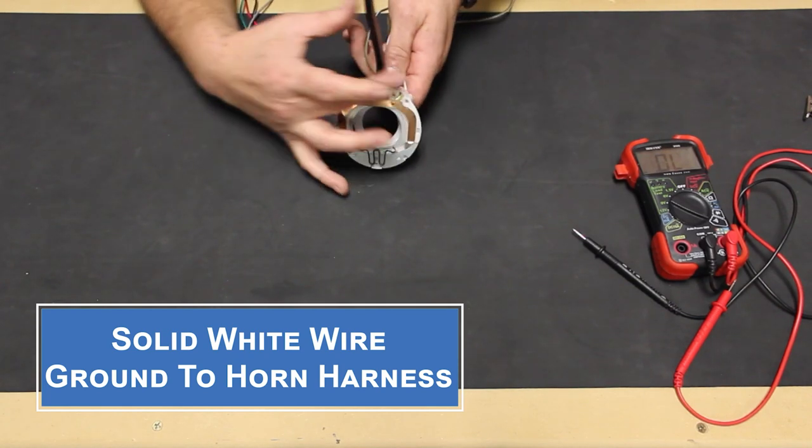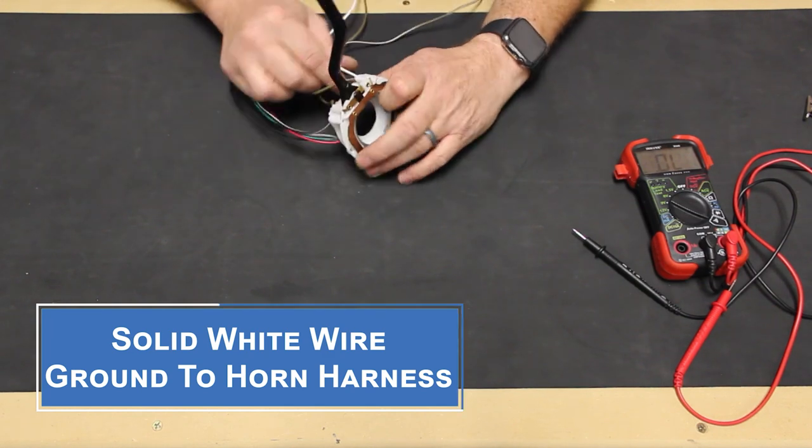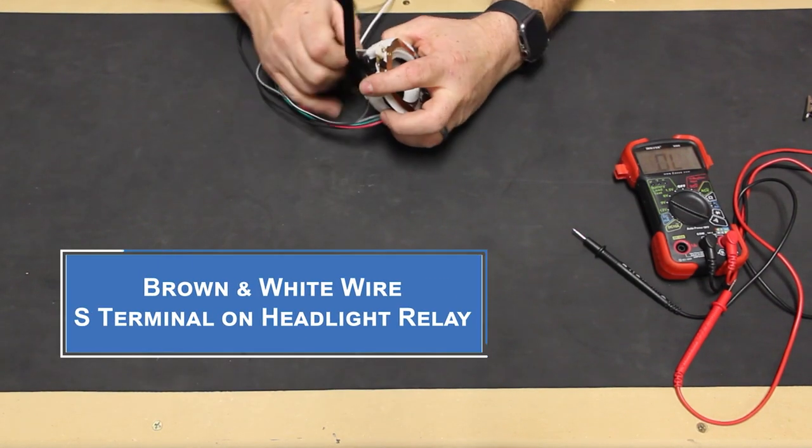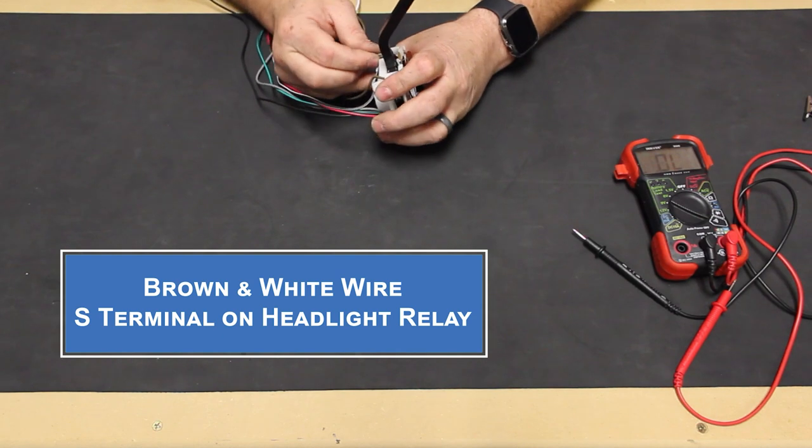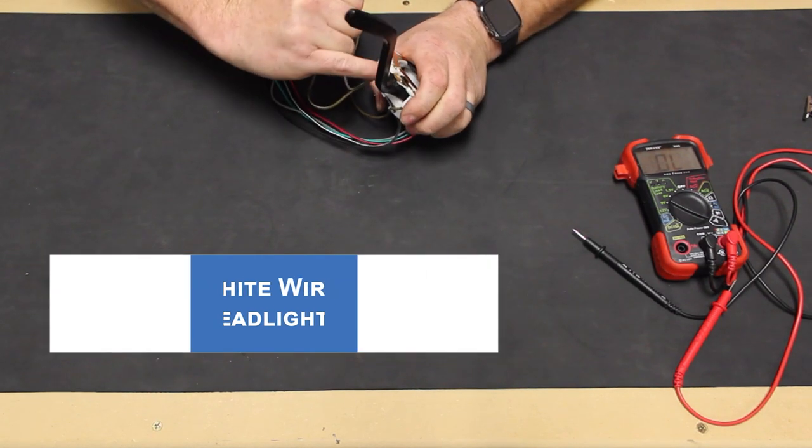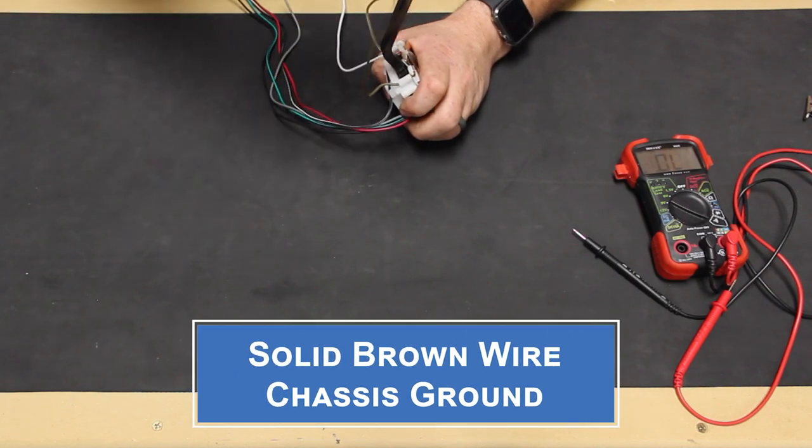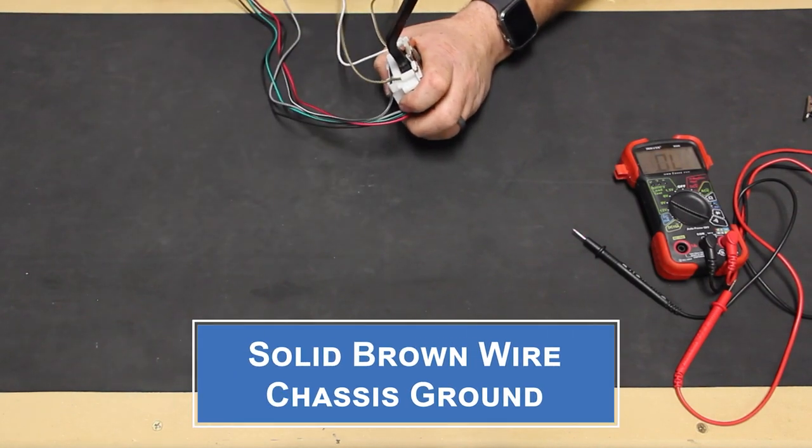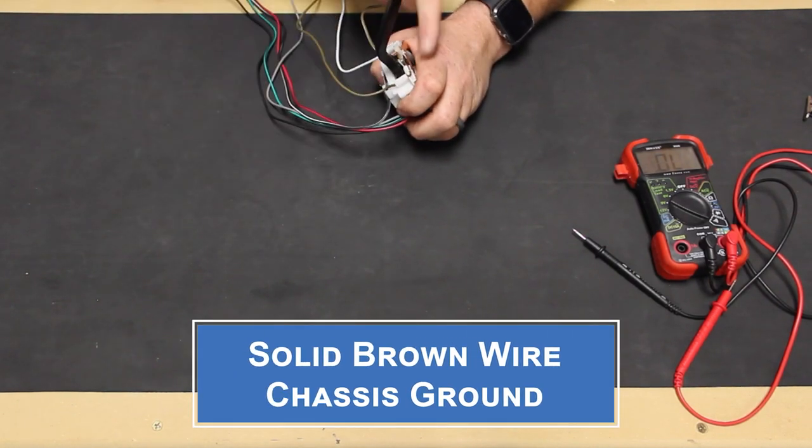This will hook up to the horn ground wire in the front left wiring harness. The brown and white wire is attached to the lower contact for the headlight relay and will connect to the S-terminal on it. The solid brown wire is the chassis ground for the headlight relay switch and will ground out to the body inside the trunk.